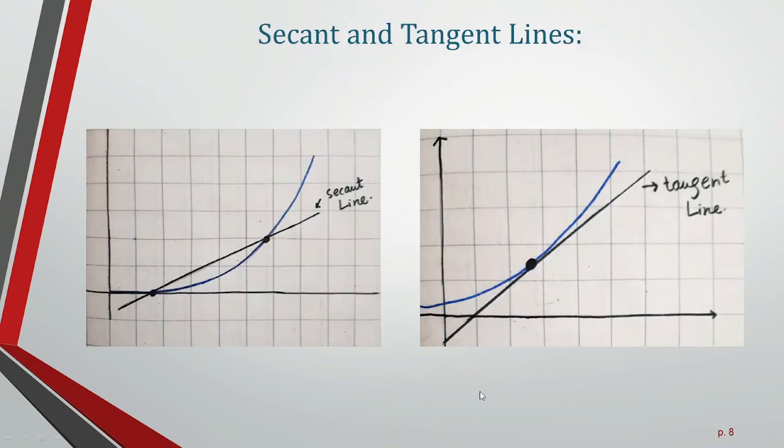Now, secant and tangent lines. A secant line cuts or intercepts a curve at two points, while a tangent line intercepts a curve at a single point. You can see the secant line here and the tangent line in this diagram.